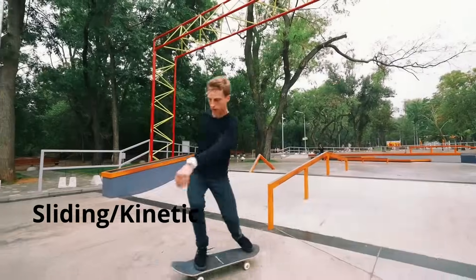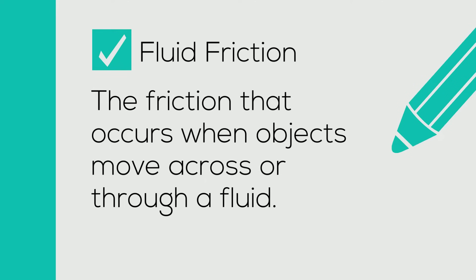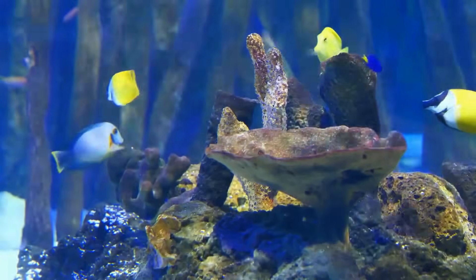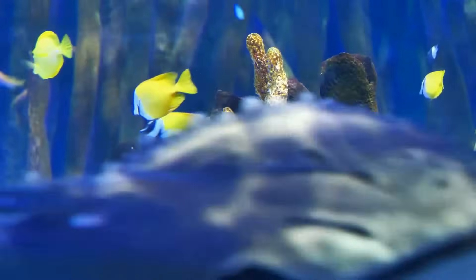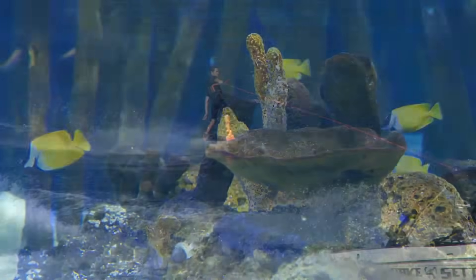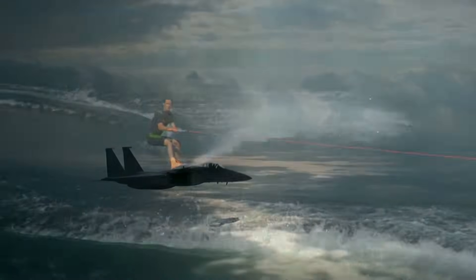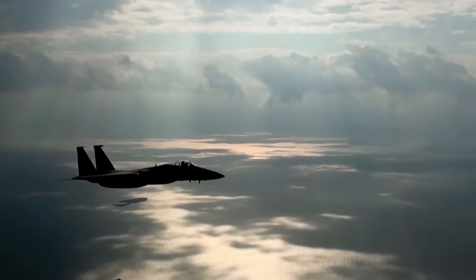Finally, let's take a look at fluid friction. It is friction that occurs when objects move across or through a fluid, and the fluid can include both air and liquid. Some examples: these fish are fighting or working against the fluid friction of the water. Sometimes this friction is called drag. This wakeboarder and this airplane are going through a sea of air where there is fluid friction.